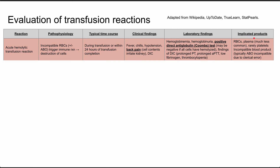These are color-coded according to how severe they are — the more red, the more severe. The first on the list is acute hemolytic transfusion reaction. The pathophysiology here is incompatible red blood cells that trigger an immune reaction in the receiver, leading to the destruction of the cells. This is often an ABO blood type incompatibility. The time course is during the transfusion or within 24 hours, usually much sooner than 24 hours.